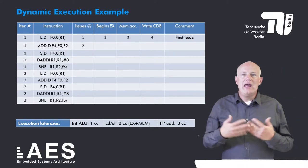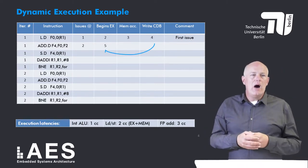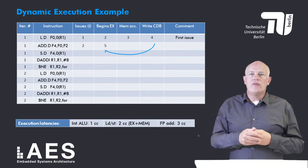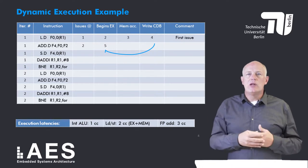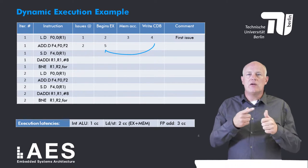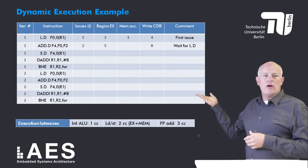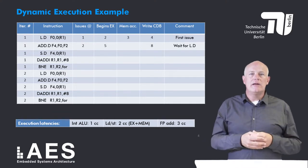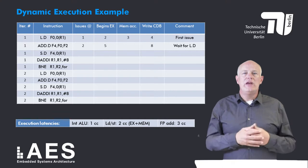The second instruction, the add double, is issued in clock cycle 2. However it cannot start executing until clock cycle 5 since it is dependent on the previous load. Then it executes for three clock cycles — in clock cycles 5, 6, and 7 — and the result is written onto the common data bus in clock cycle 8. So this instruction has to wait for the preceding load.